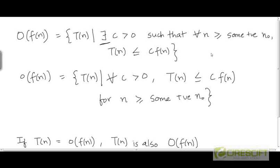For example, if we take the function 3n², it is in big-O(n²). But 3n² cannot be upper bounded by any constant multiple of n²; you have to choose a constant greater than or equal to 3. If I choose a value of c equal to 2, or ½, or ¼, then 3n² is not going to be upper bounded by c times n². So in the definition of big-O, we are talking about the possibility of there being some constant multiple of f that upper bounds a given function t.